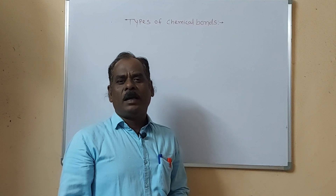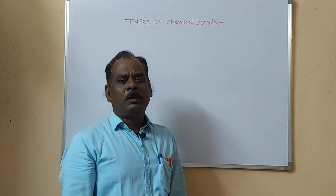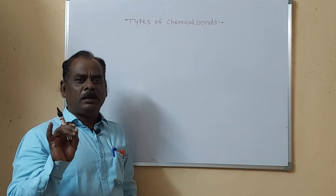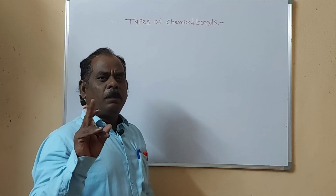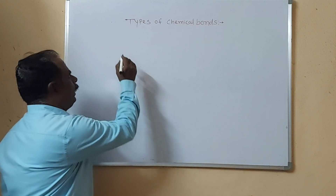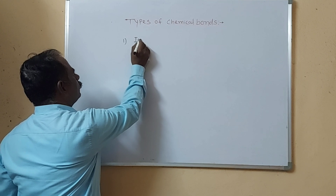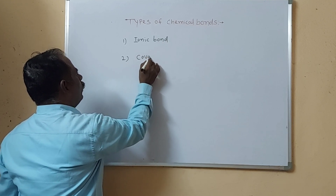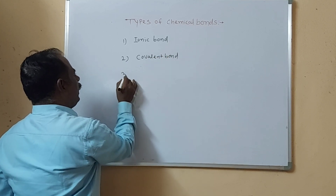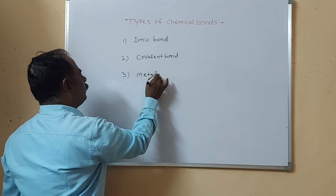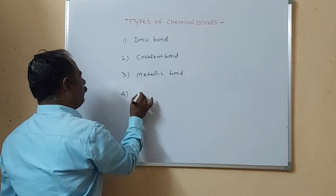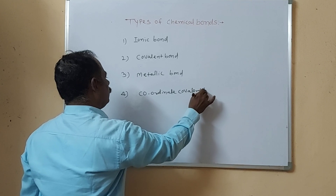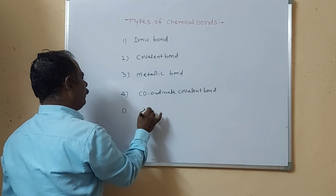We will discuss three elements of the bond: electro-positive element, electronegative element, and inert element. In the first chapter, we will cover the chemical type of bonding. The bonds are: 1. Ionic Bond, 2. Covalent Bond, 3. Metallic Bond, 4. Coordinate Covalent Bond.